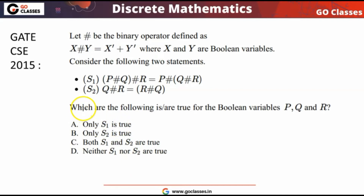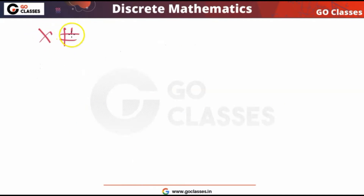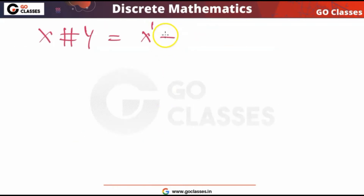Hi everyone, welcome to Go Classes. Let's solve this question. This is a GATE 2015 question and it is very simple. A new operation is given: x hash y is defined as x' + y', okay. So this is the new operation — x hash y equals x' plus y'.